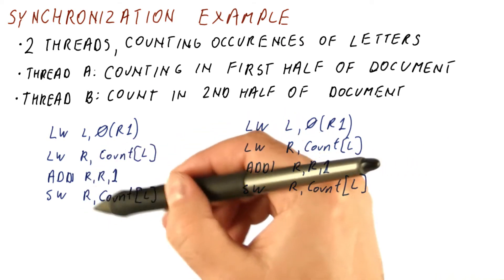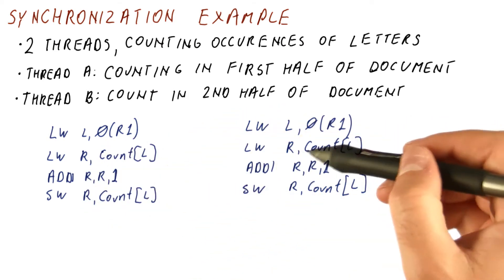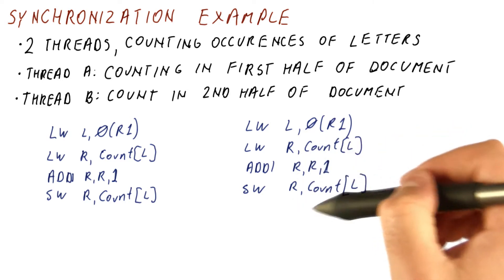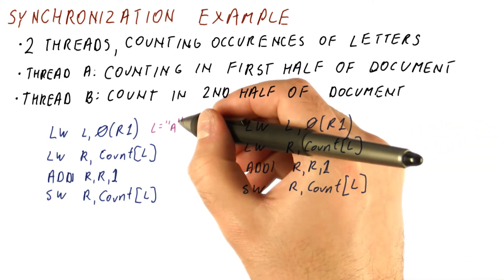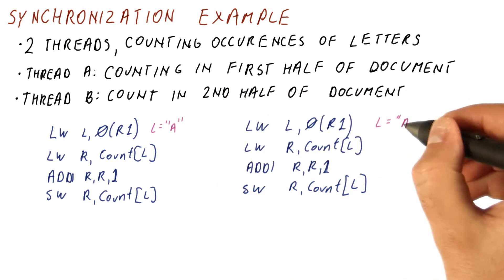This thread is incrementing one part of the count array. This one is incrementing something else in the count array. But what if this thread sees letter A, and this thread, at the same time, sees another letter A in its own part of the array?